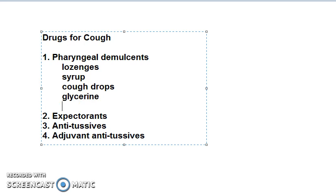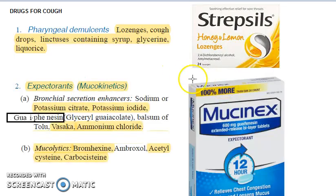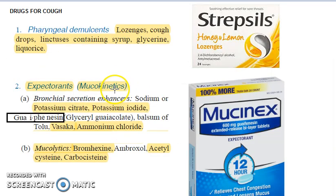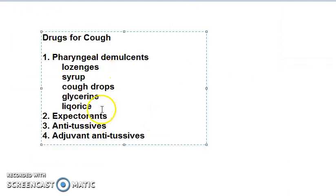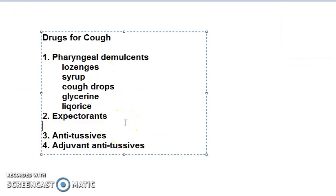Under pharyngeal demulcents you have lozenges, syrup, cough drops, glycerine, liquorice — correct. Lozenges, cough drops, linctus containing syrup, glycerine and liquorice. Coming to expectorants — under expectorants you have two groups.